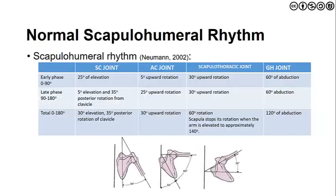Looking at the totality of shoulder mobility: we get approximately 120 degrees from the glenohumeral joint, and an additional 60 degrees from the scapulothoracic joint, for a total of 180 degrees. Note that both the SC and AC joints do contribute a degree of elevation and rotation, rather than sitting there statically.